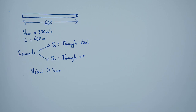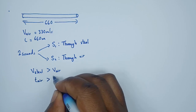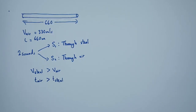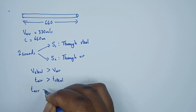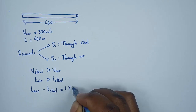Since the speed in steel is greater than the speed in air, the time taken in air is greater. Think of it logically: if it takes a shorter time to travel from one end to the other through steel, it takes a longer time through air. So the time in air minus the time in steel equals the time interval difference of 1.89 seconds.